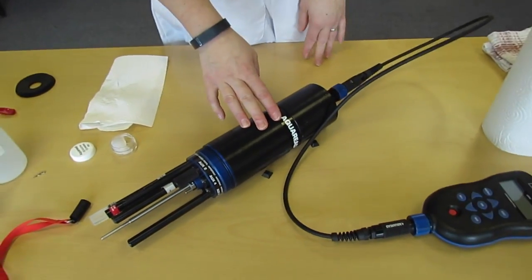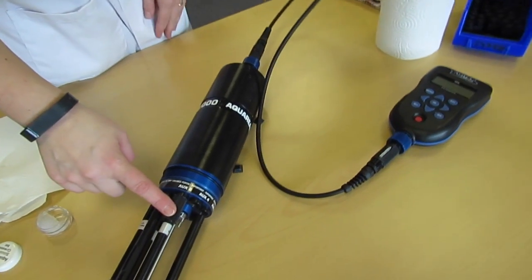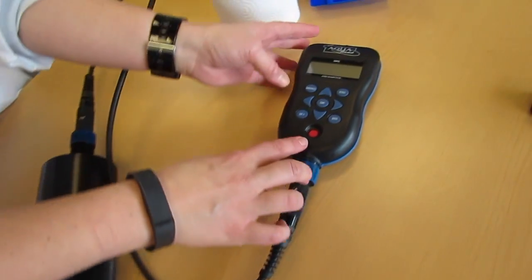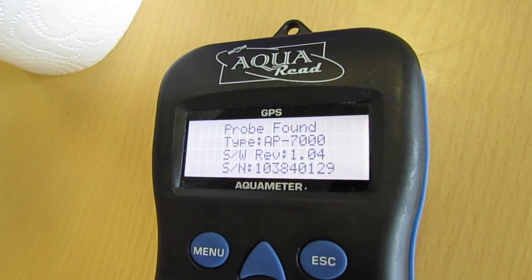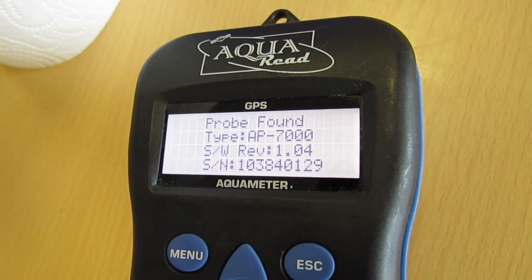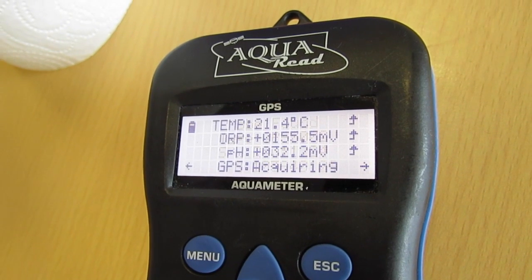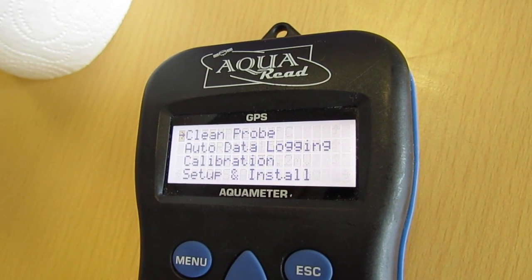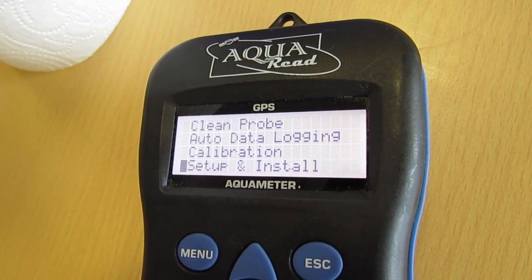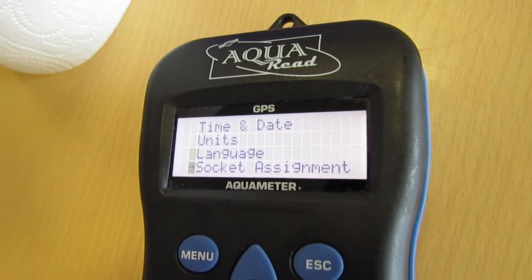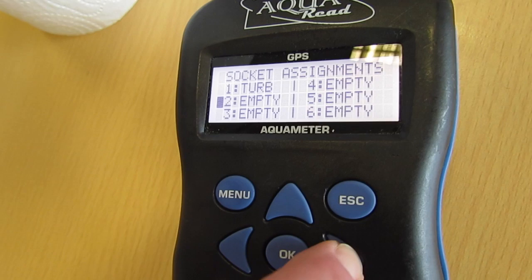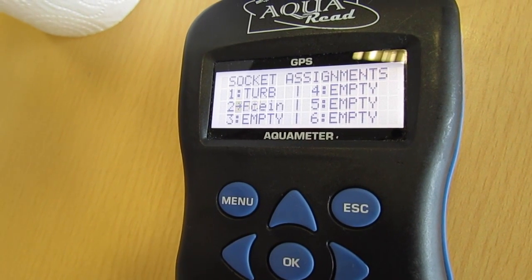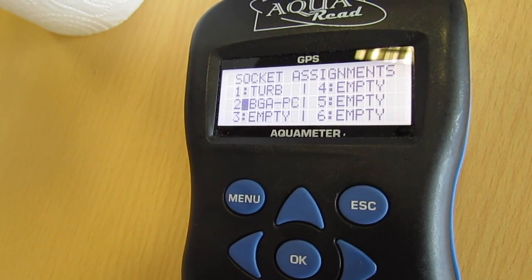The probe now needs to be told that this electrode is installed in aux 2. Turn on the meter, press the menu button, scroll down to setup and install, socket assignment, and as it's in aux 2, scroll down to fluoride, which is the IESC I've just installed.